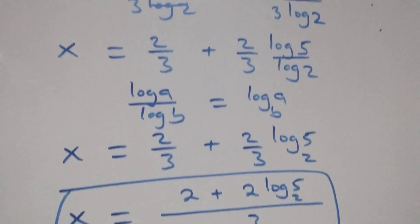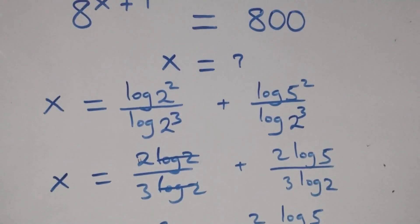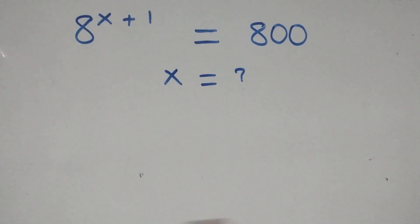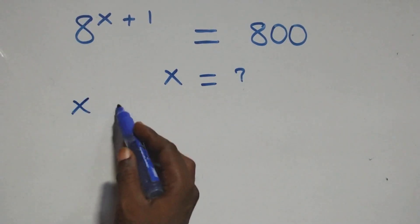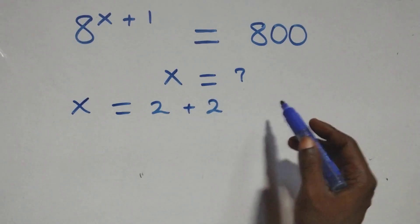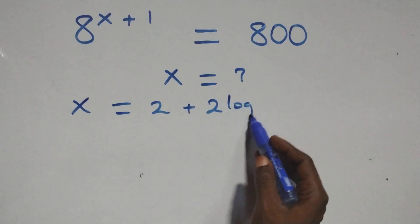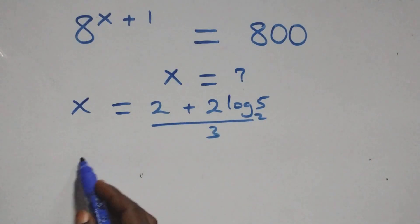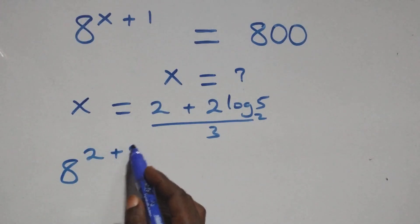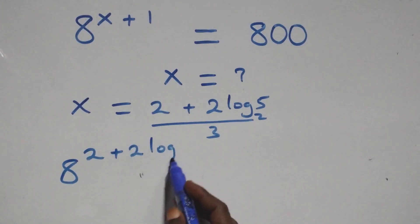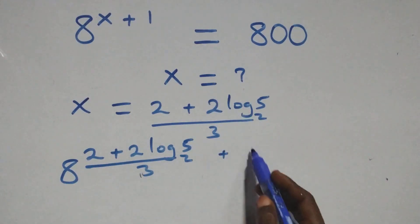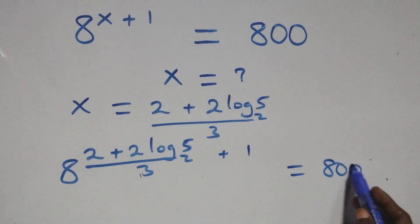Now let's check if this satisfies the given problem. We substitute the value x equals (2 plus 2 log 5 base 2) all over 3. Then the expression with plus 1 added — is it equal to 800 on this side?